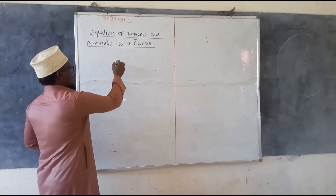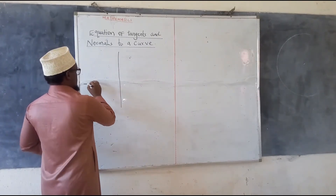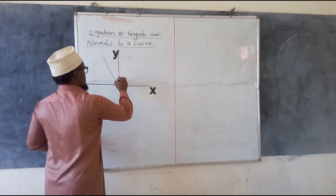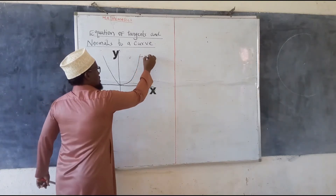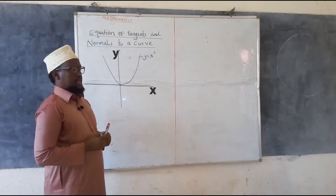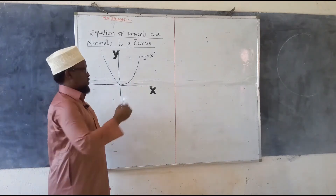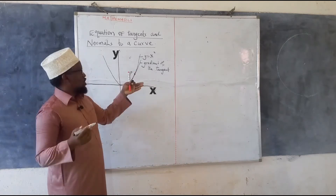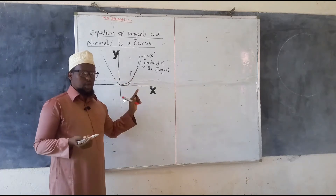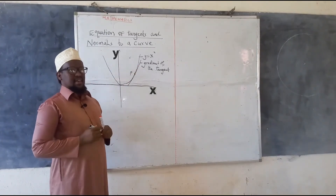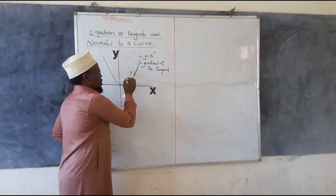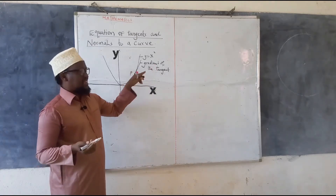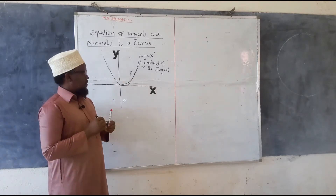For example, if we have a curve — let's say y equals x squared — and you are told to find the gradient at a point P on the curve, then what you need to do is find the gradient of the tangent passing through that point. The gradient of the tangent is the same as the gradient of that point on the curve.